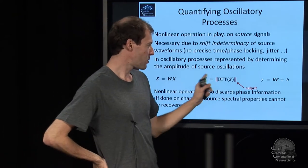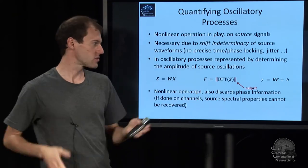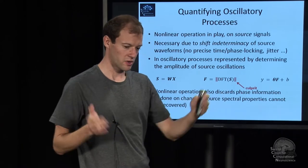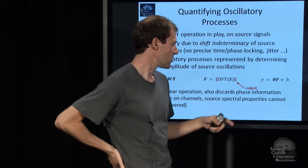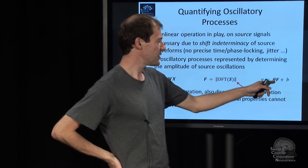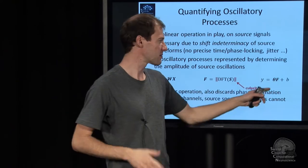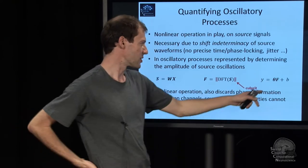And that's this part. It gives us F, which is now the spectral characteristics. And then we map that onto the output with some kind of a linear mapping.